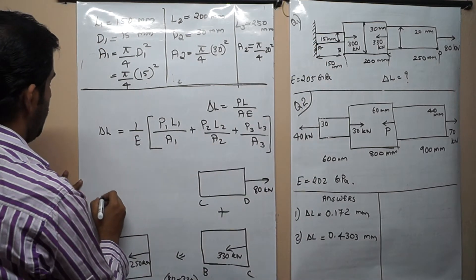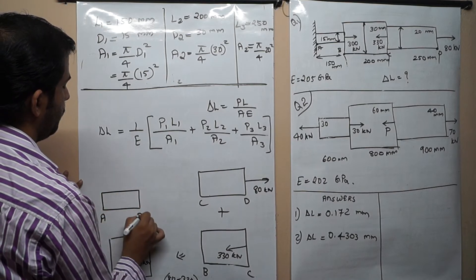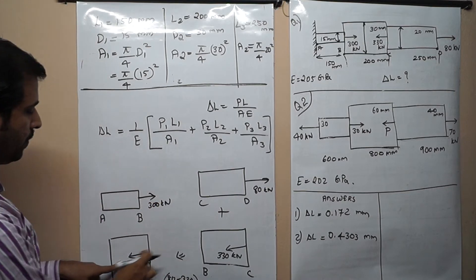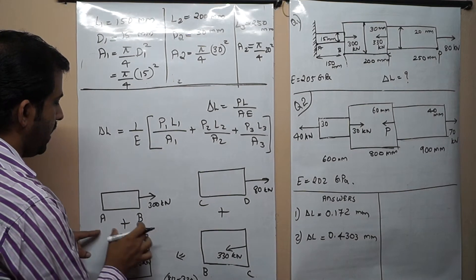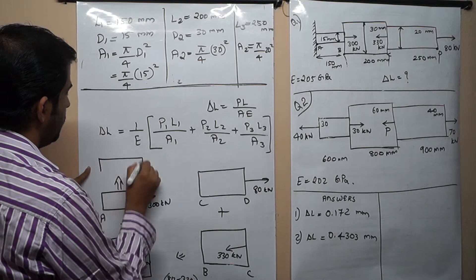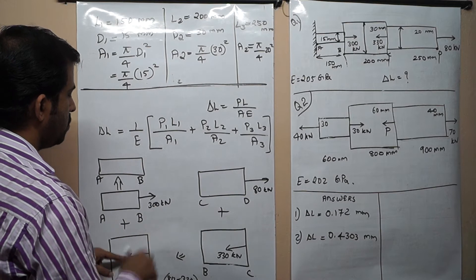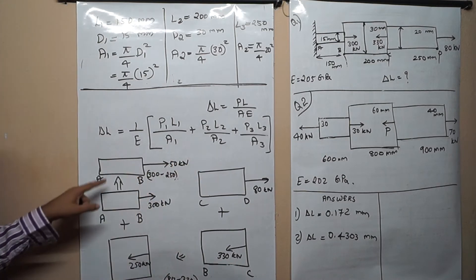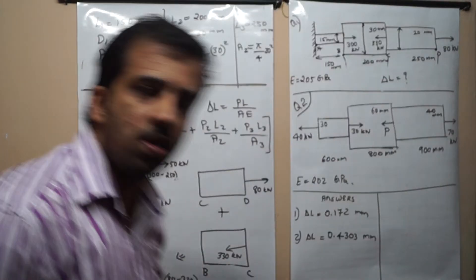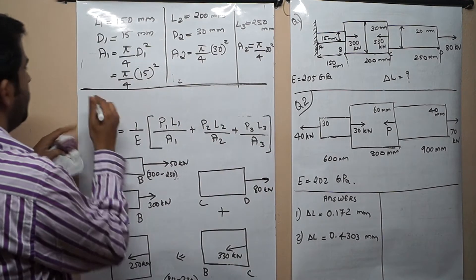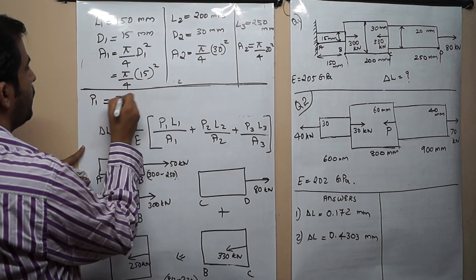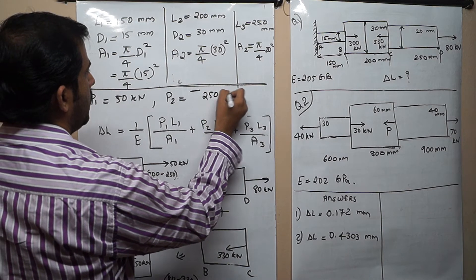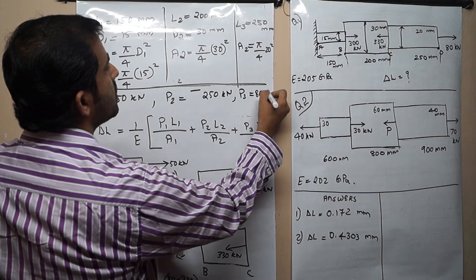Now we take section AB. In section AB, a 300 kN force is acting outwards, and 250 kN is acting to the left from section BC. Adding BC and AB: 300 minus 250 equals 50 kN acting on section AB. So we have P1 equals 50 kN on segment 1, P2 equals minus 250 kN (compression), and P3 equals 80 kN on the last segment.